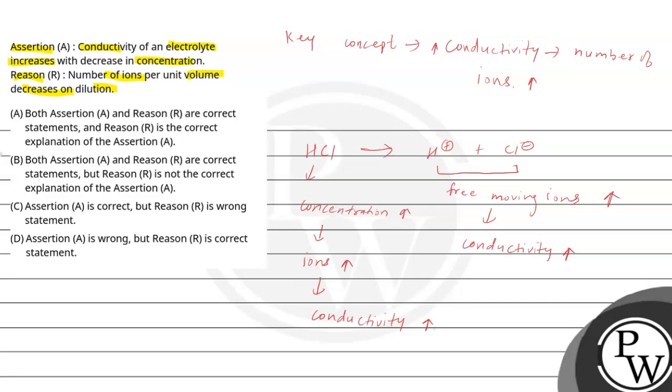Assertion will be increased. Conductivity of an electrolyte increases with decreasing concentration. This is wrong. Number of ions per unit volume decreases on dilution. This is correct.